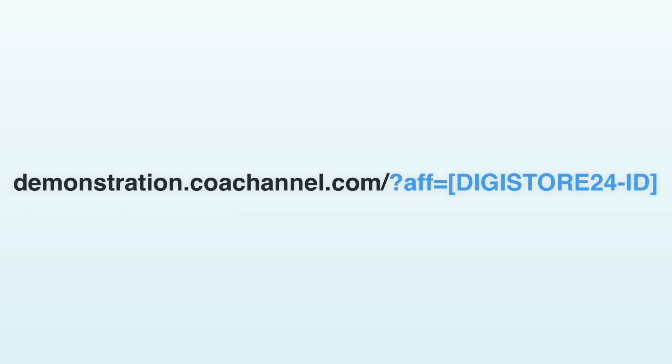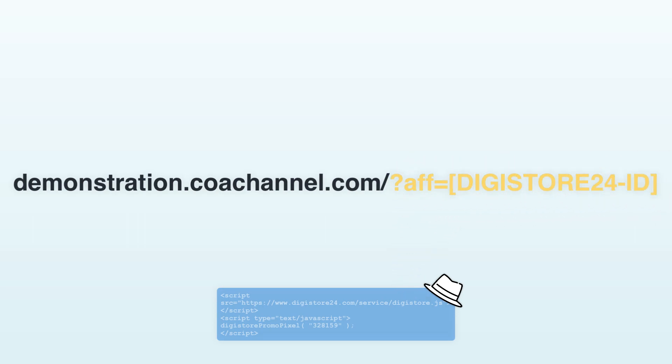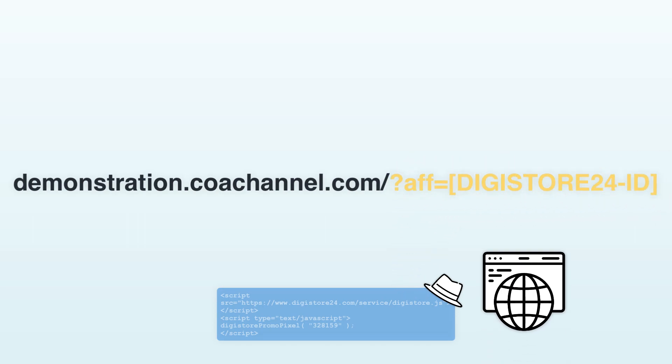AFF here stands for affiliate. After the equal sign, the affiliate just has to enter their Digistore24 ID. If a potential customer then clicks on this link, the promo pixel recognizes this get parameter and the information about the affiliate is transferred to the browser's local memory, which is not deleted as frequently as cookies are.